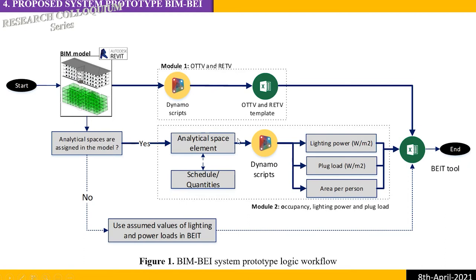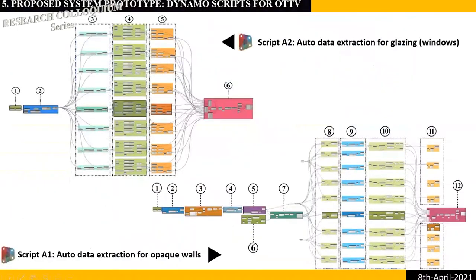The second module takes advantage of the analytical spaces in the model to get information automatically — users currently input this manually one by one, but here we generate it automatically to be imported into BIT. These are the Dynamo scripts developed for the OTTV module — they are visual scripting, not text-based scripts.